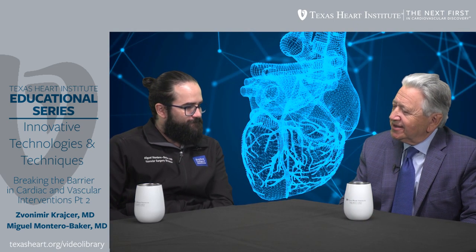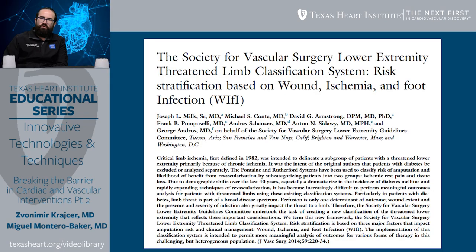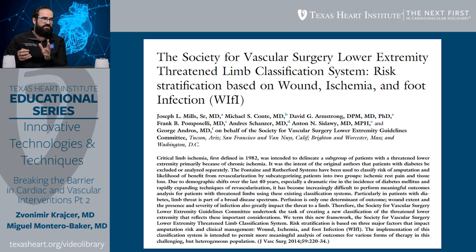Tell us a little bit about WIfI classification and what is the importance of this classification and how it helps us in managing patients with critical limb ischemia. So a very brief description as to why this article was developed: for many years we were only using Rutherford classification to determine the complexity of our patients, and a lot of the industry studies were based on this Rutherford classification. The problem with Rutherford is that it's a classification based on tissue loss and some symptoms, and it creates very big pockets for patients that may be very different amongst each other.